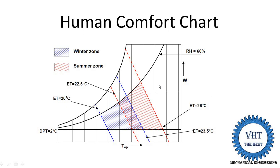Now for the winter zone: 90% of people feel comfortable at an effective temperature of 20 degrees centigrade. This blue line indicates the effective temperature of 20 degrees centigrade. Another 10% of people feel comfortable between 20 degrees centigrade and 23.5 degrees centigrade, which is another blue line at 23.5 degrees centigrade.